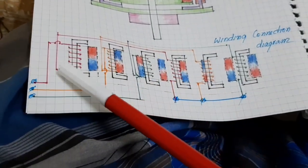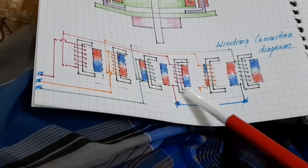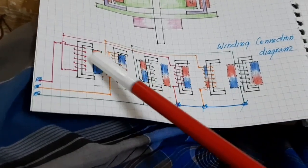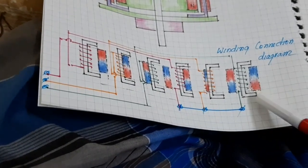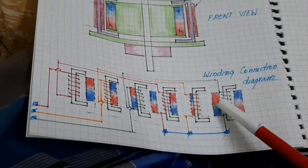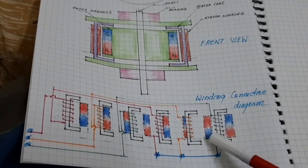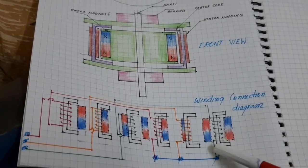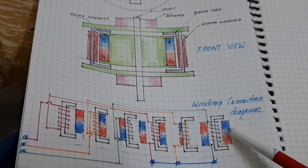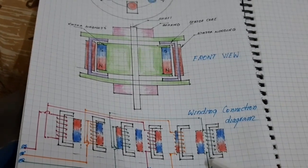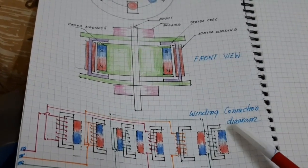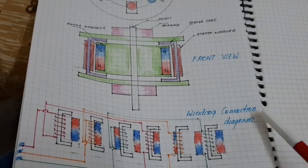And here, this is the 8 rotor, 6 stator poles winding connections are given. Now, I am going to show how to operate the PLDC motor and what is the power consumption. Thank you.